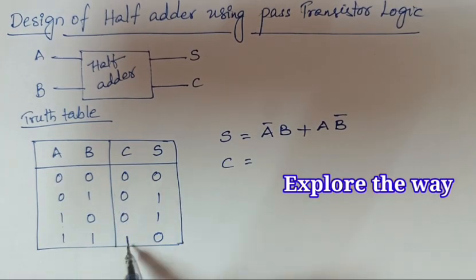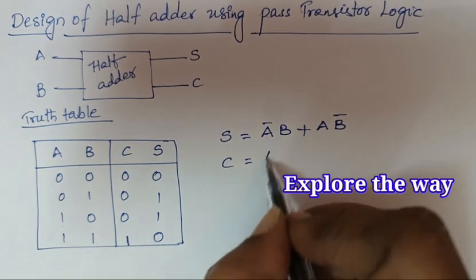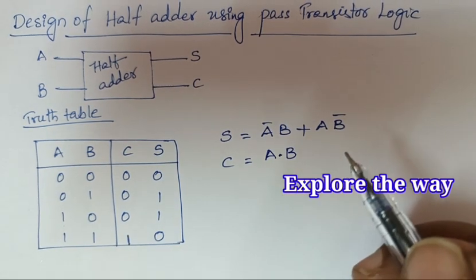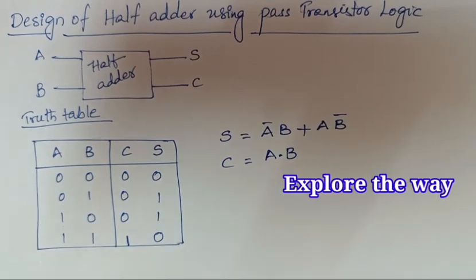Carry output is 1 only for one input combination: when A equals 1 and B equals 1. For all the remaining cases, carry output is 0.